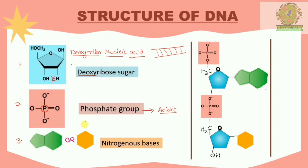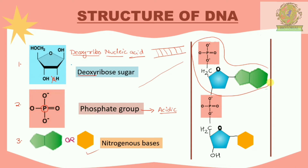There are two types of nitrogenous bases in DNA, which we will learn about in further slides. When these three components — deoxyribose sugar, phosphate group, and nitrogenous base — come together, we can form a single linear strand of DNA. In this image, the phosphate group is attached to the deoxyribose sugar, and the deoxyribose sugar also has nitrogenous bases beside it. This unit keeps on repeating — only the nitrogenous base changes, otherwise everything is the same.